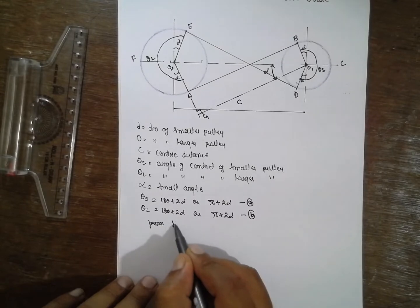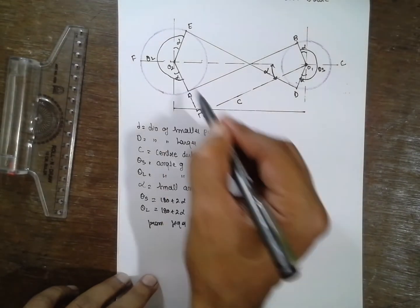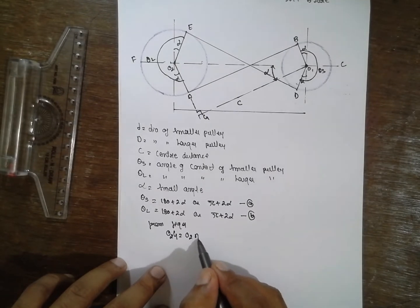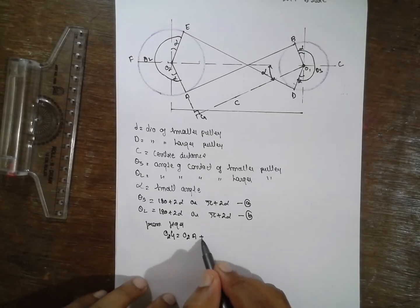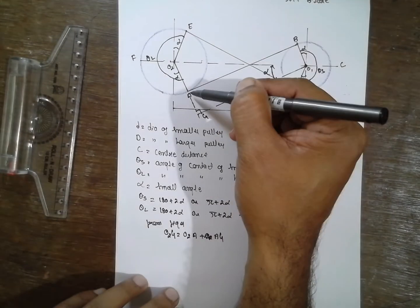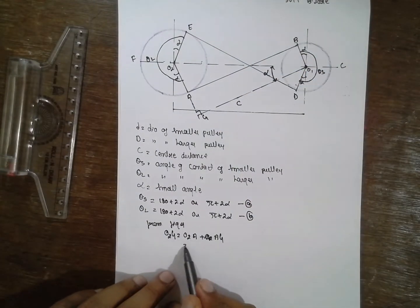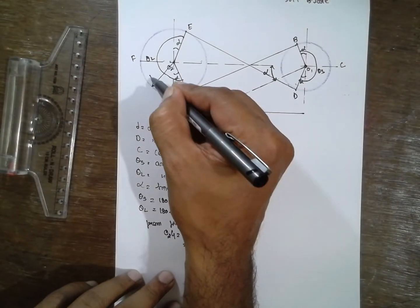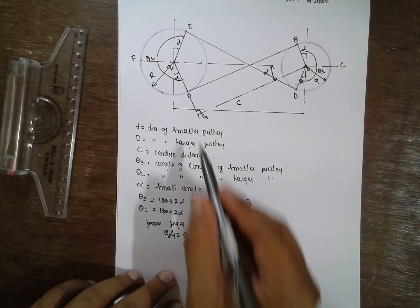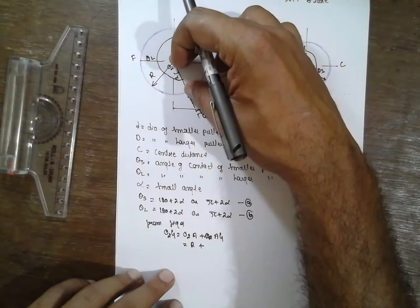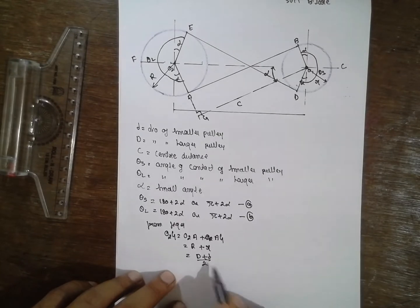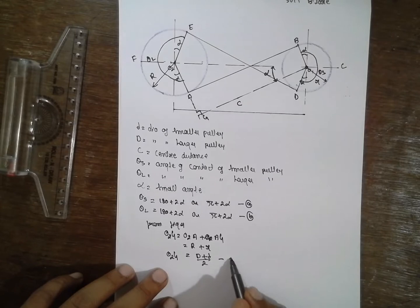Next, from the figure, O2G can be written as O2A plus AG. Now O2A is nothing but capital R, and AG is nothing but small r. So O2G equals R plus r, which in terms of diameter is written as (D plus d) divided by 2. This is equation C.